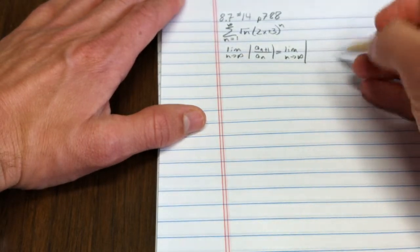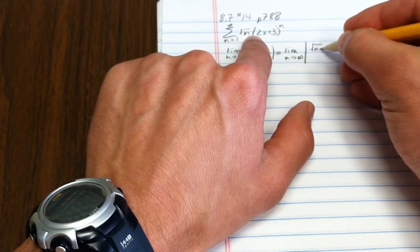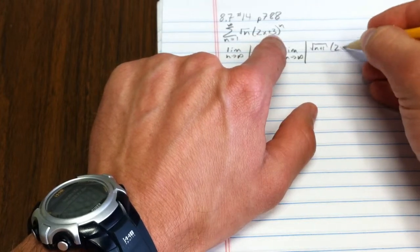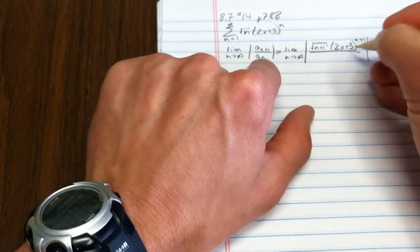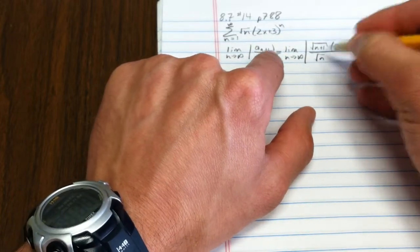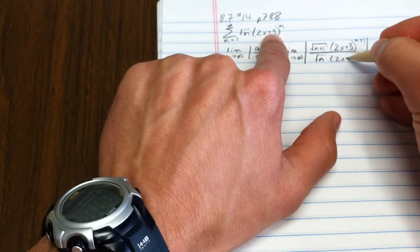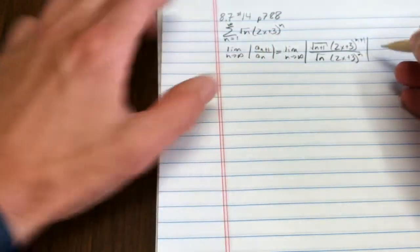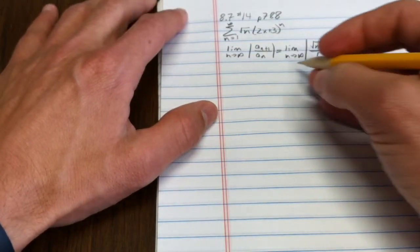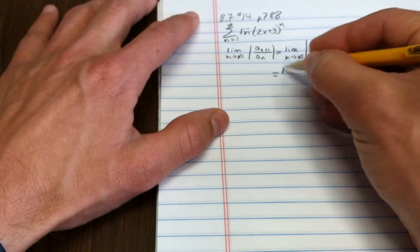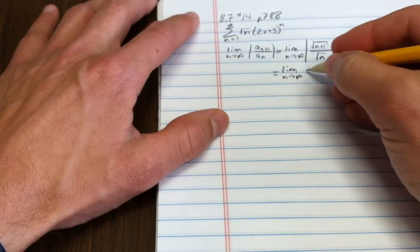That's the absolute value of the n plus first term. That's the square root of n plus 1 times 2x plus 3 to the n plus 1 over the nth term. Square root of n, and then I've got 2x plus 3 to the n. Okay, these reduce pretty well. If you have n plus 1 of them on the top, n of them on the bottom, you need to divide. You're just going to get 1.